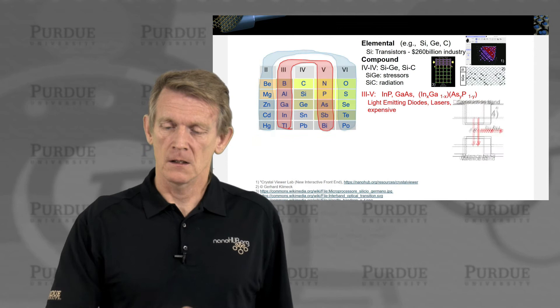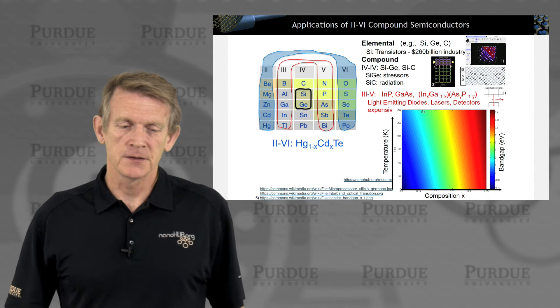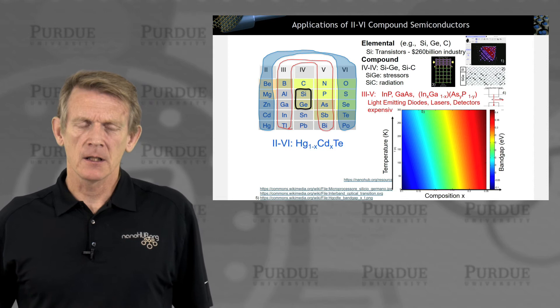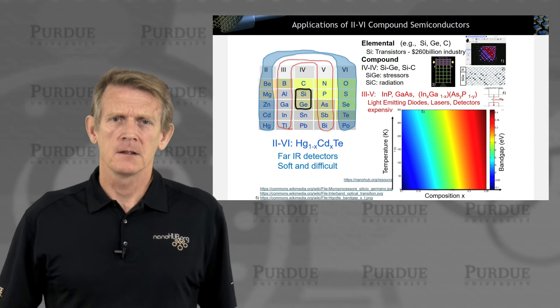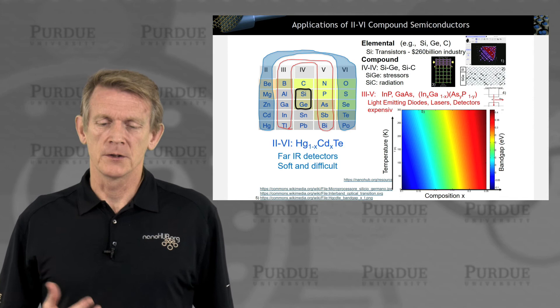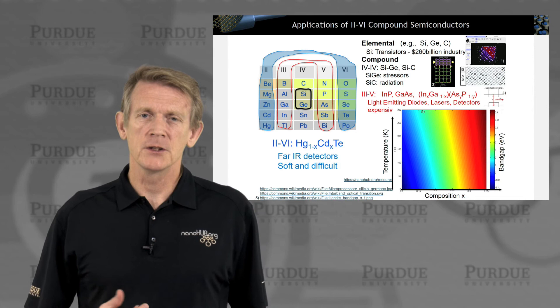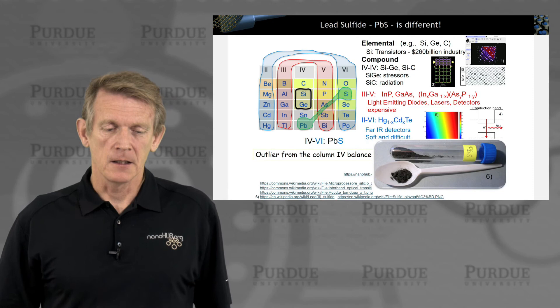The preference for three-five semiconductors for light applications has to do with direct and indirect band gaps, which we'll learn about. Another classical material system is HgCdTe — Mercury Cadmium Telluride — which has been heavily used for infrared detectors and is still being used today. It is very soft and challenging to deal with as a material system, but advanced infrared detectors continue to use it.